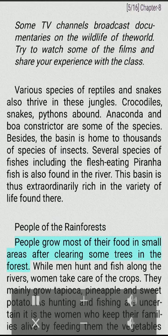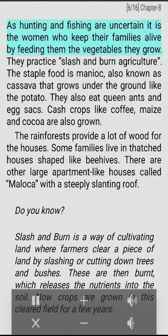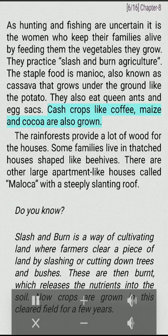People of the rainforests grow most of their food by clearing some trees in the forest. While men hunt and fish along the rivers, women take care of the crops. They mainly grow tapioca, pineapple and sweet potato. As hunting and fishing are uncertain, it is the women who keep their families alive by feeding them the vegetables they grow. They practice slash and burn agriculture. The staple food is manioc, also known as cassava, that grows under the ground like the potato. They also eat queen ants and egg sacks. Cash crops like coffee, maize and cocoa are also grown. The rainforests provide a lot of wood for the houses. Some families live in thatched houses shaped like beehives, while others live in large apartment-like houses called maloca, with a steeply slanting roof.